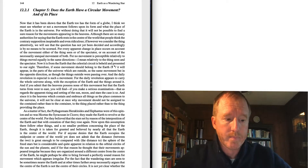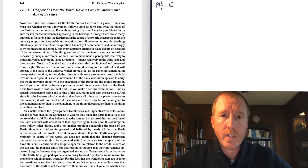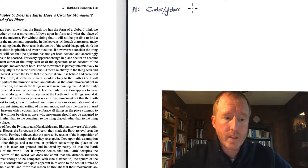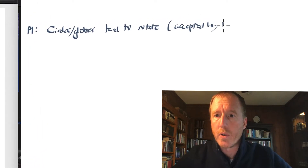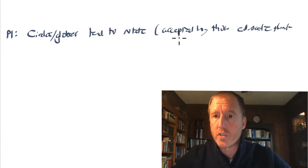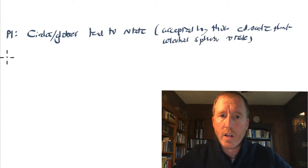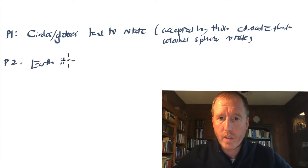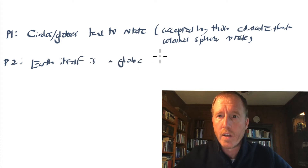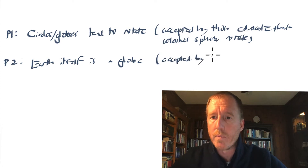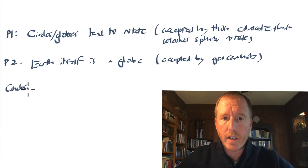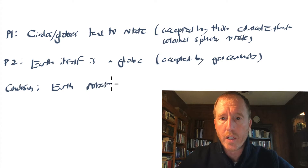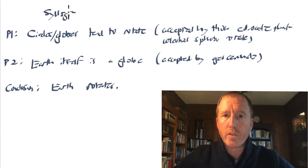He's using a syllogism. Premise one: circles, or globes, tend to rotate — and this was accepted by his opponents, those who advocate that the celestial spheres rotate. The second premise is that the earth itself is a globe, also accepted by the geocentrists. And if globes tend to rotate, and the earth is a globe, then the conclusion he arrives at is that earth also rotates. This is the form of a syllogism, for those of you interested in the structure of argumentation.